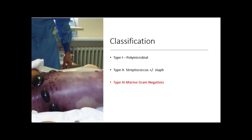Moving on to classification systems. Type 1 infections are polymicrobial. This includes things like Klebsiella, Proteus, and in the case of oral infections, Bacteroides and Clostridium. This kind of infection generally happens in sicker patient populations — older patients, people with diabetes, any form of immunosuppression, and vascular insufficiency.